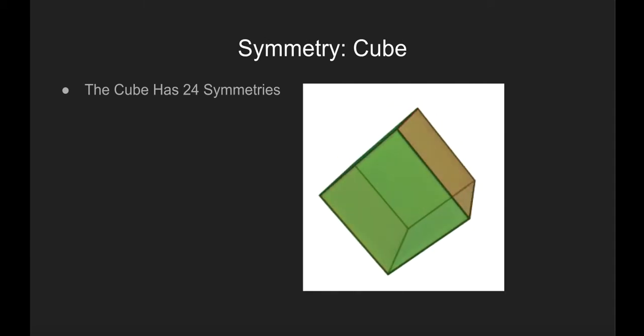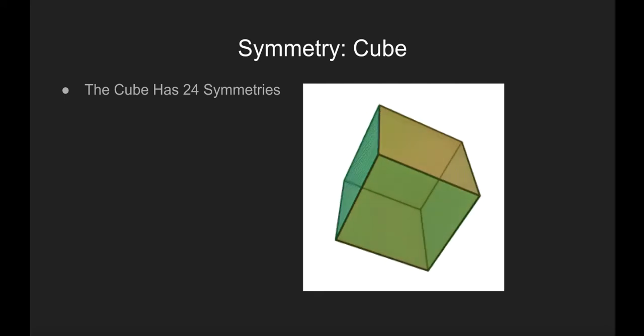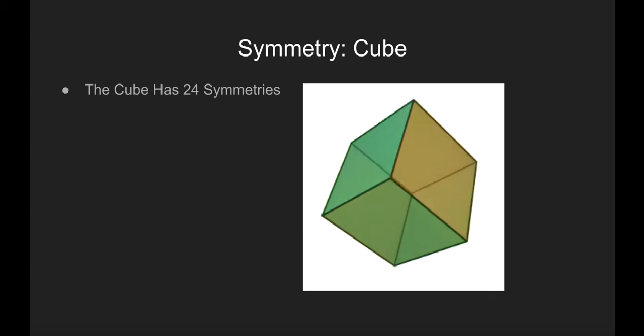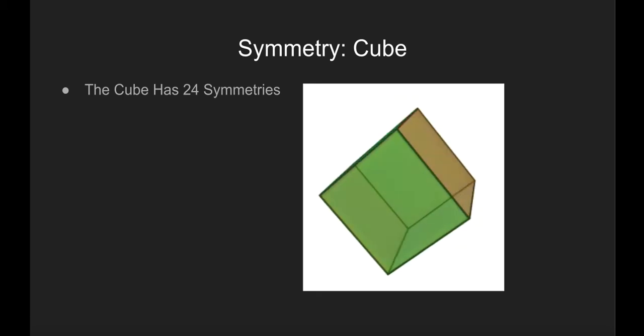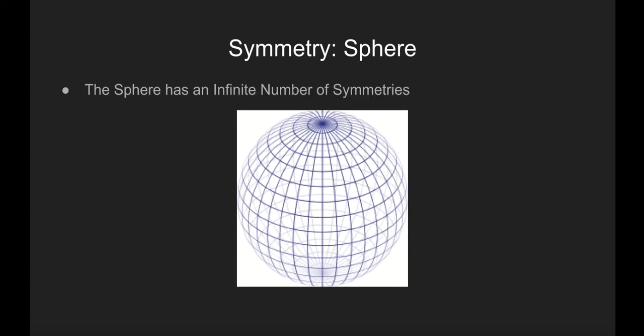In the case of the cube, there are 24 different ways to rotate it such that it retains the same shape, so we can say that a cube has 24 symmetries. With a sphere, since there are an infinite number of symmetrical rotations, it has an infinite number of symmetries. Now it is obvious that since a sphere has an infinite number of symmetries, while a cube has only 24, the sphere is more symmetric than the cube.